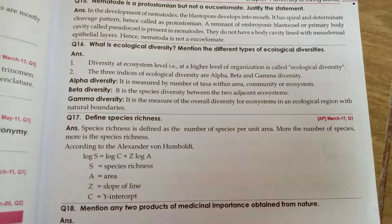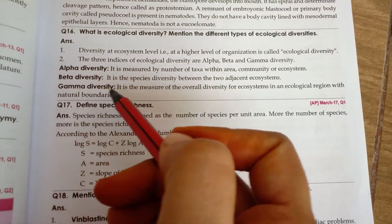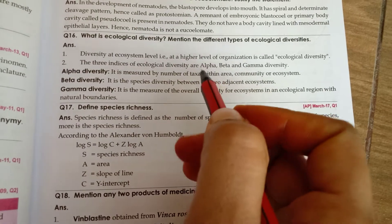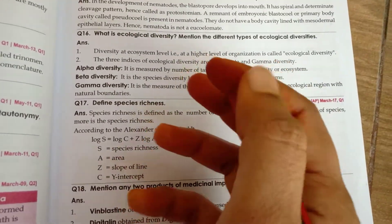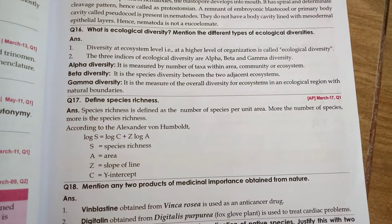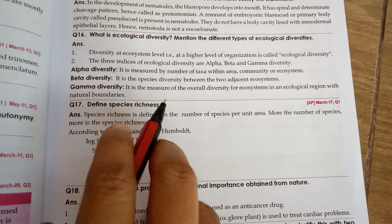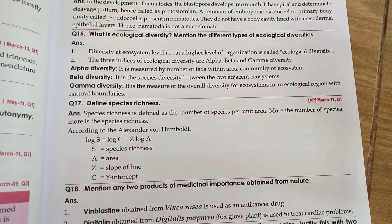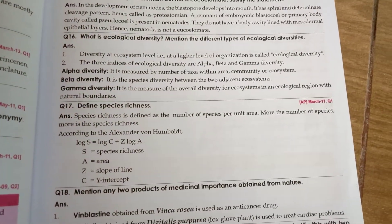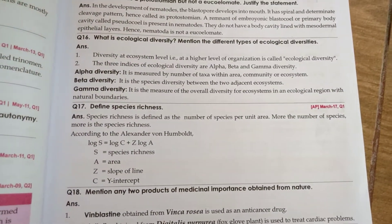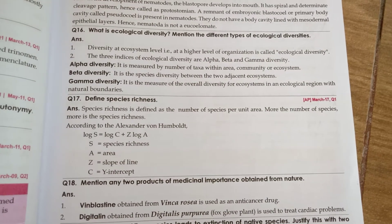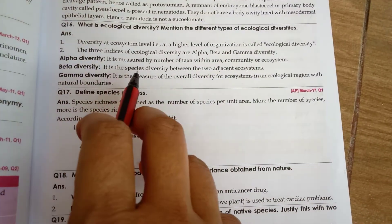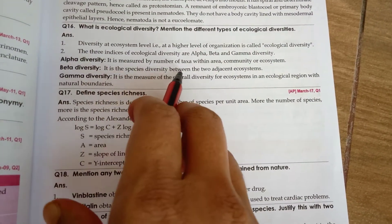Alpha diversity is the diversity and distribution of organisms measured by the number of taxa within an area, community, or ecosystem. Beta diversity is the species diversity between two adjacent ecosystems — for example, comparing species between two neighboring villages.